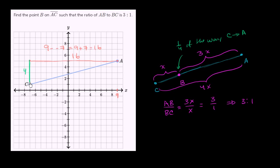So what we can say, going from C to B in each direction, in the vertical direction and the horizontal direction, we're going to go 1/4 of the way. So if we go 1/4 in the vertical direction, we're going to end up at y is equal to 2.